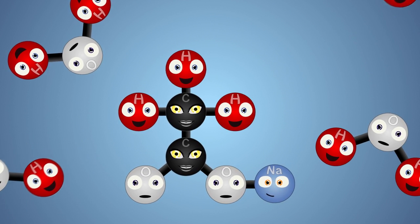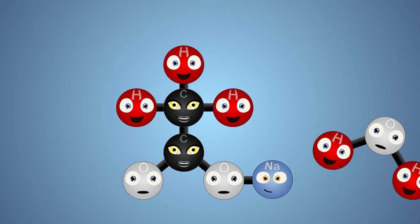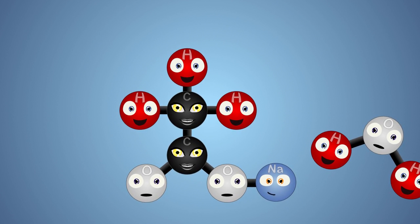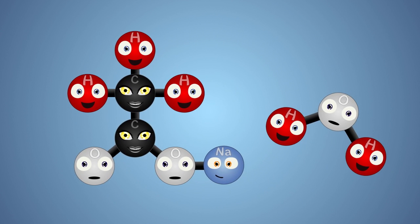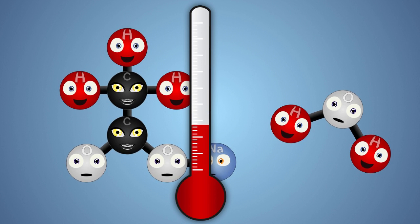By boiling our solution, we remove some of the water molecules. The more water molecules we remove from our solution, the higher our concentration of sodium acetate gets. Once our solution has reached the correct concentration, we place it into the fridge or ice bath to cool.